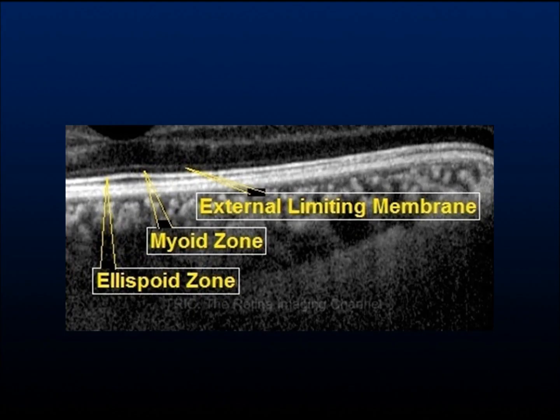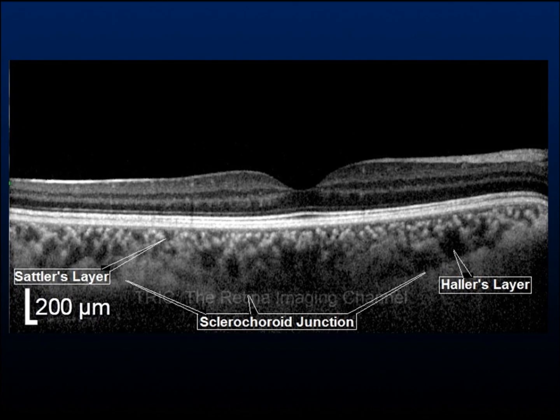The external limiting membrane, myoid zone, and ellipsoid zone are shown in this blown-out image. The enhanced depth imaging allows us to image beyond the RPE as seen in this picture. The sclerochoroid junction, large vessel layer or Haller's layer, and medium vessel layer or Sattler's layer can be visualized with enhanced depth imaging.